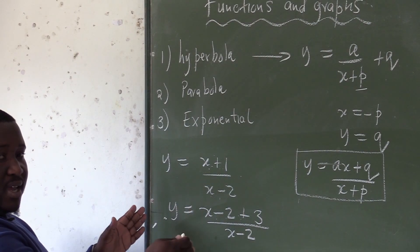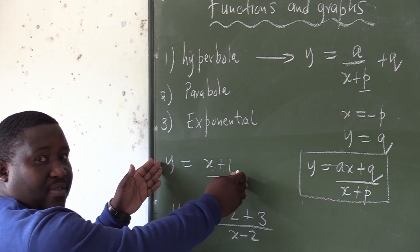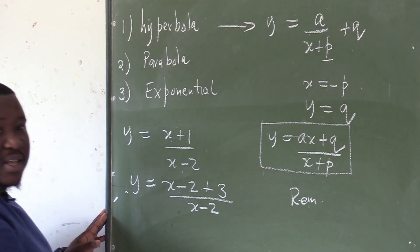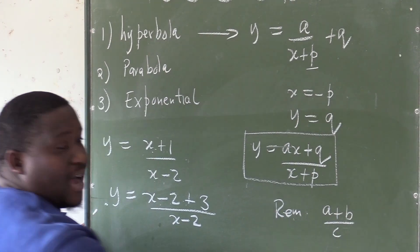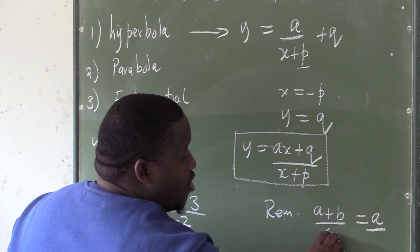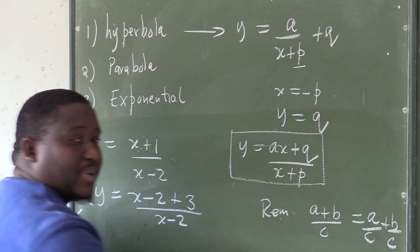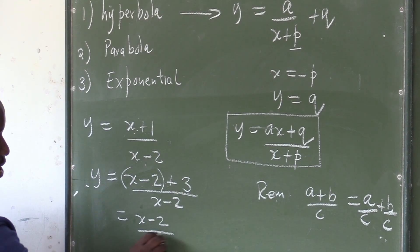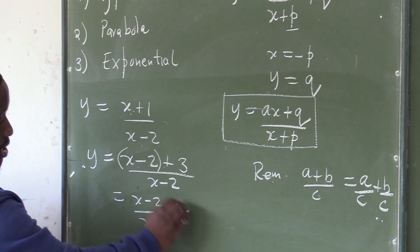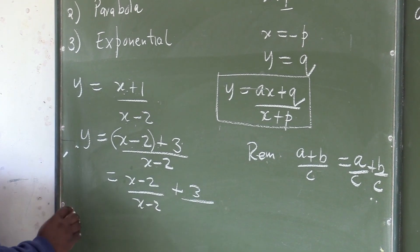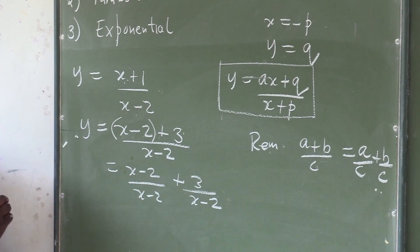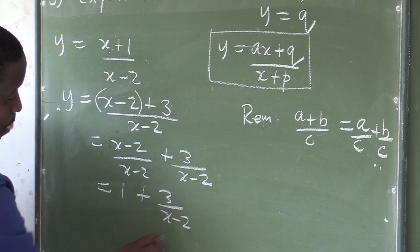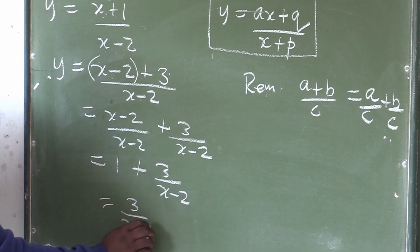What we are trying to do is convert this graph back to the standard form. In mathematics, we know that if I have a plus b over c, I can say this is the same as a over c plus b over c. Now let's apply the very same principle. I am going to group x minus 2, then say this will be x minus 2 divided by x minus 2, plus 3 still divided by x minus 2. The x minus 2 divided by x minus 2 gives us 1, so we get 3 over x minus 2 plus 1.